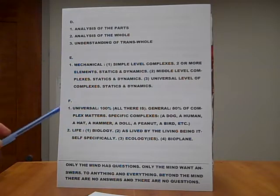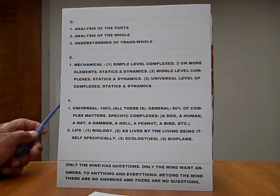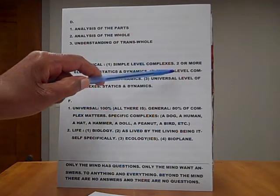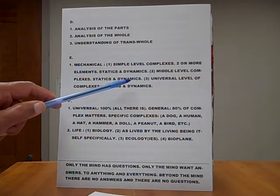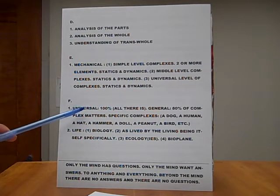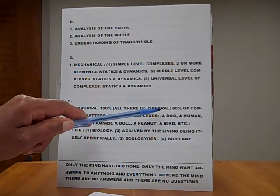We'll go to E. One, mechanical. The mechanical is, number one, simple level complexes. Two or more elements, statics and dynamics. Two, simple level, pardon me, middle level complexes, statics and dynamics. Three, universal level of complexes, statics and dynamics. We'll go to F. Number one, universal. One hundred percent. All there is.